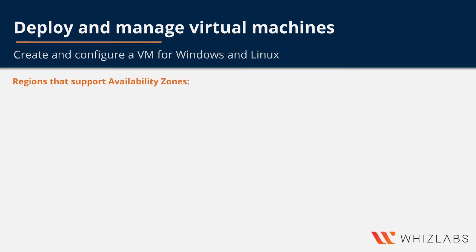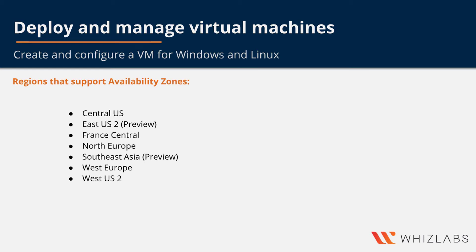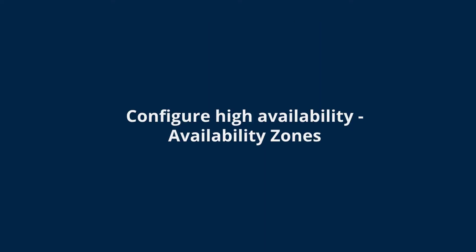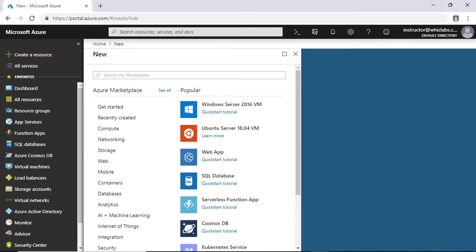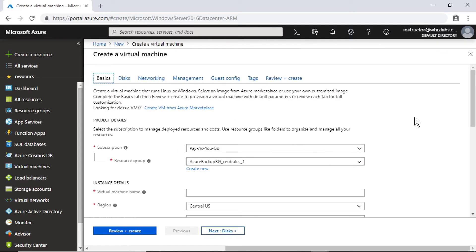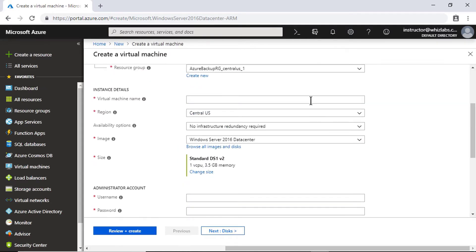These are some of the regions where availability zones are supported right now. Let's talk about creating a Windows Virtual Machine in an availability zone, also called a zoned Windows Virtual Machine. Creation of a zoned Windows Virtual Machine is very simple — just go through the normal process of creating a virtual machine, and I will name this VM 'zoned VM'.